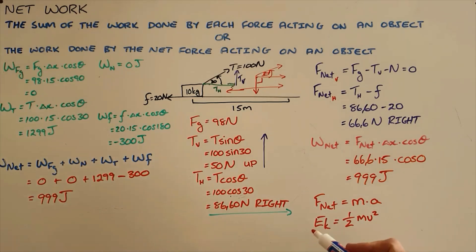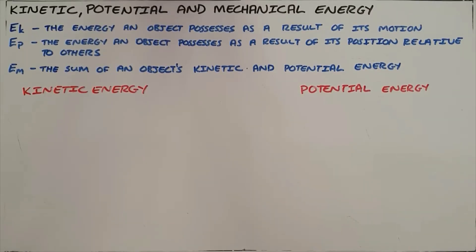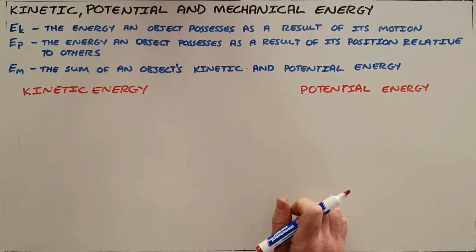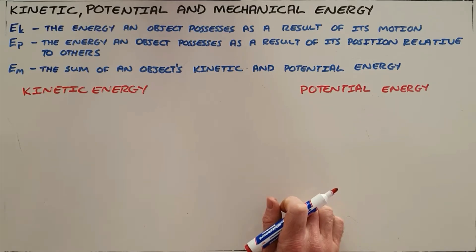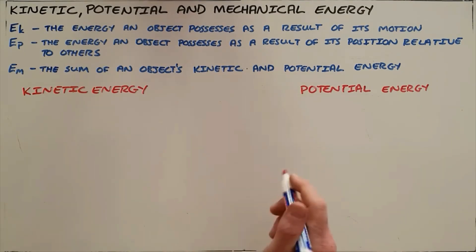It is also possible for work to add energy to potential energy, which normally occurs when an object is lifted upward. We know that the potential energy of an object depends on its mass and its height above Earth's surface. Energy added through work can thus appear in one of two forms: kinetic energy — the energy an object possesses as a result of its motion, essentially the energy a moving object has that would need to be transferred to change its motion — or potential energy.